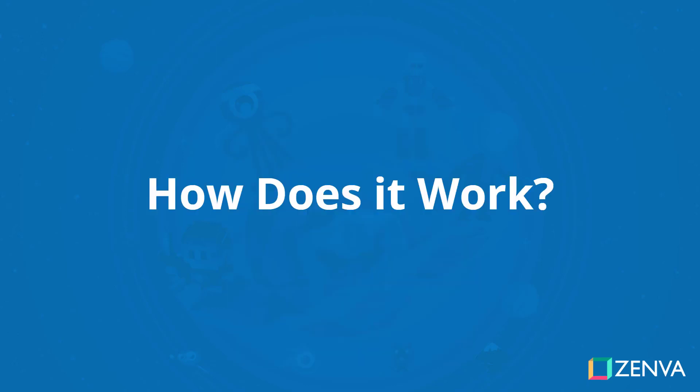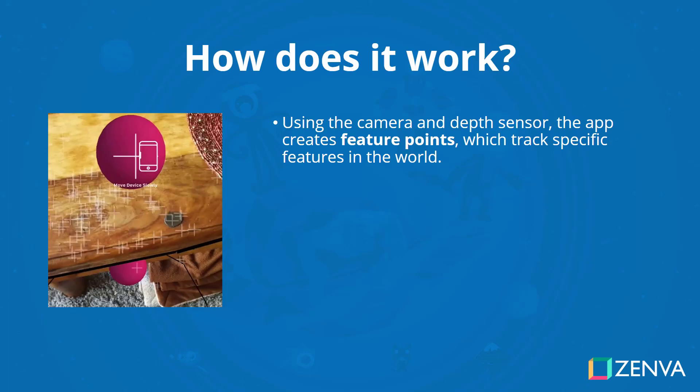So how does AR Foundation actually work inside Unity? First of all, it uses your camera and depth sensor, and with that the app creates things known as feature points. These are basically points of interest in the world that it can track — it can track their position and orientation relative to other points. This roughly maps out a 3D mesh of your world so that it understands how far away things are and the position between different feature points.